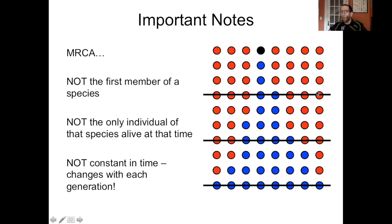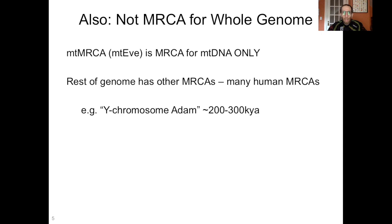The most recent common ancestor is not constant in time — it changes with each generation. The black dot represents the most recent common ancestor for this generation, but if you go back in time and look at earlier generations, you're going to find a different most recent common ancestor. Putting aside the genetics specifics, the creationist story doesn't make sense because creationism requires that the common ancestor is always the same person at the same time. In real life, it changes with each generation. Also, the mitochondrial DNA MRCA or Y chromosome MRCA are not the MRCAs for the rest of the genome — every part of the genome has its own most recent common ancestor.